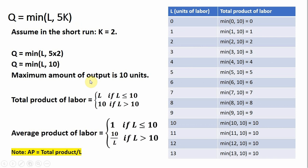The total product of labor will equal L if L is less than or equal to 10. The total product of labor will equal 10 if units of labor exceed 10. I've put a table together to help see this.